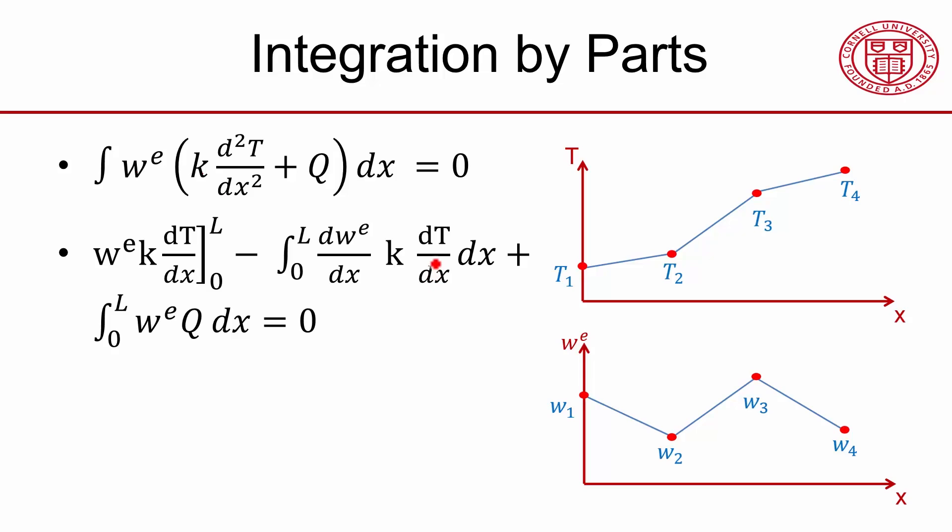So now key things happen. Here I have in the original differential equation, I have a second derivative for the temperature, but here I have the first derivative, and I know that the second derivative doesn't behave very well.